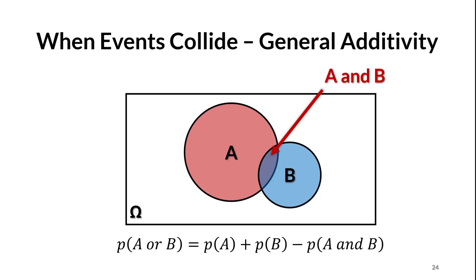Events aren't always mutually exclusive, so if we want a general way to add probabilities together, we have to deal with the overlapping area on the Venn diagram. The area of the rectangle labeled omega is equal to 1. The areas of events A and B equal the probability of each event. When these two events overlap, we get a lens shape between them whose area equals the probability of A and B occurring at the same time. The equation at the bottom ensures we don't double count that lens space when we add probabilities.